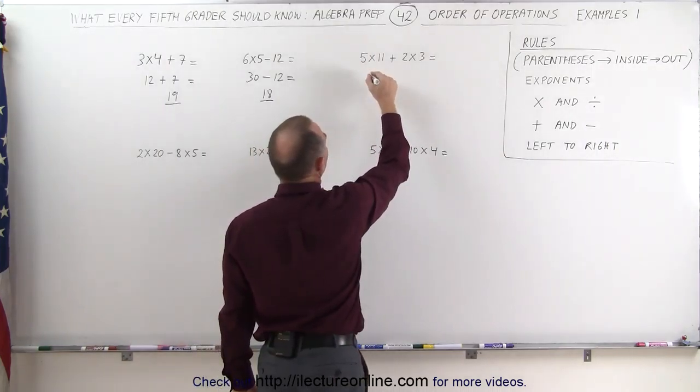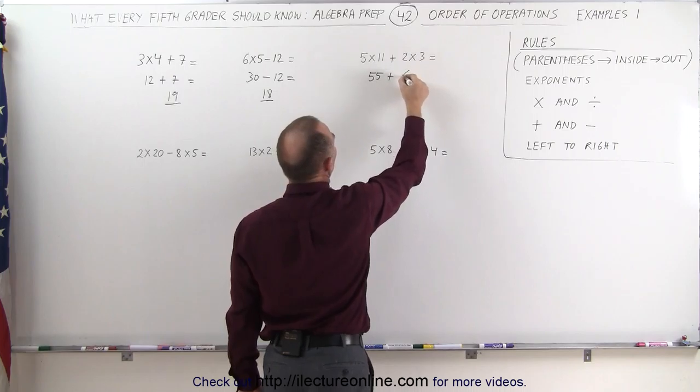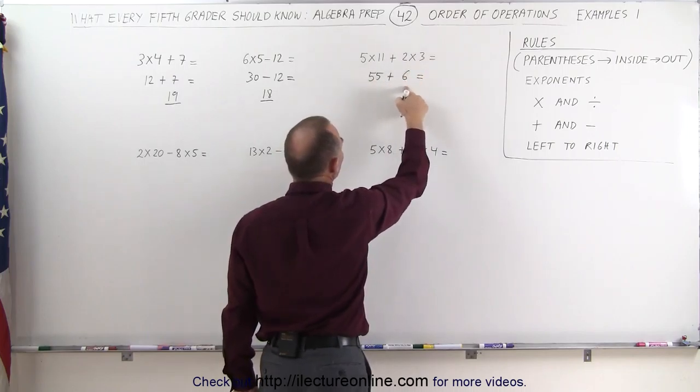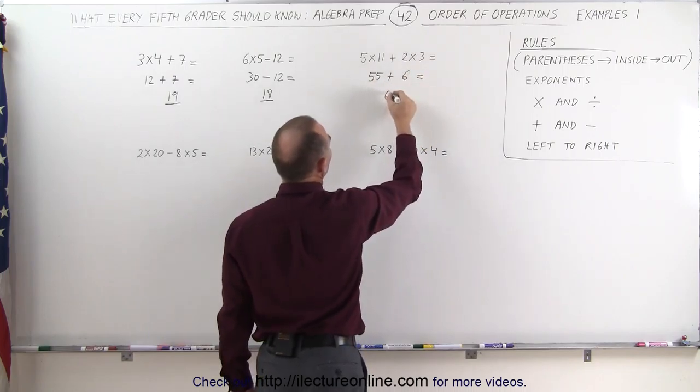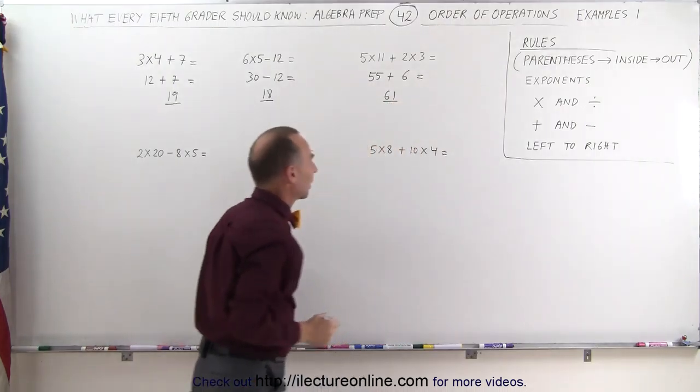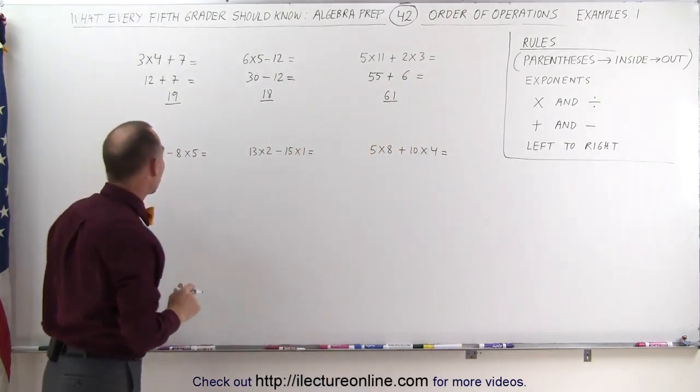5 times 11, that's 55, plus 2 times 3, which is 6. And 55 plus 6, now we can do the addition, is equal to 61, and that's the correct answer.